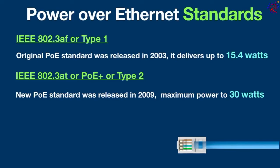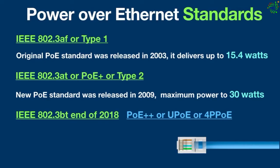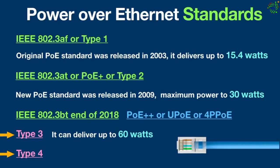30 watts was not good enough for technology like flat screen displays, LED lighting, or POS terminals. To meet the demand for high power, a new PoE standard, IEEE 802.3bt, was released at the end of 2018. It has different names such as PoE++, Ultra PoE, and four-pair PoE. This standard is further broken down into two types: Type 3 can deliver up to 60 watts over four pairs of wires, and Type 4 can deliver up to 100 watts from the PoE switch to power devices, enabling applications such as LED lighting, security card readers, intercoms, and laptops.